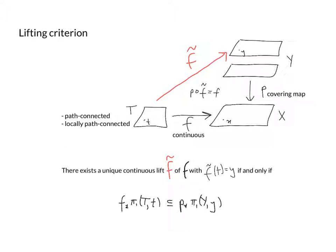We've already seen a couple of results that told us when we could lift a map to a covering space. For example, the path-lifting lemma told us we could always lift a path to a covering space, and the homotopy-lifting lemma told us we could always lift a homotopy to a covering space. Here is a completely general result that tells us when we can lift a map to a covering space.